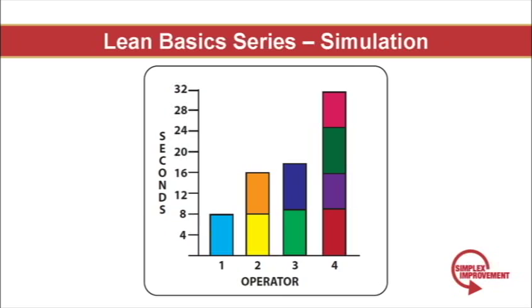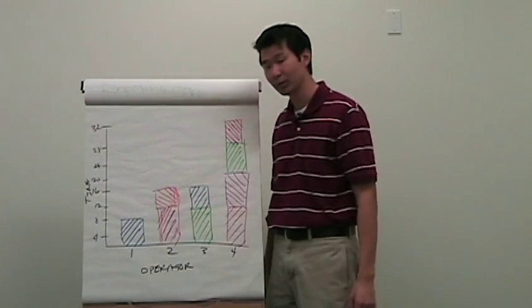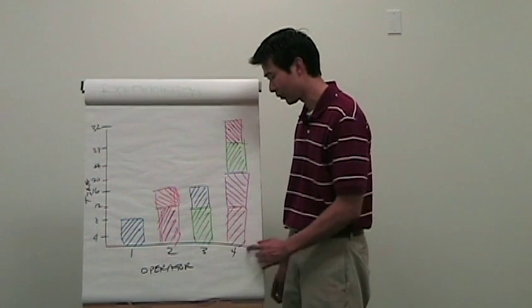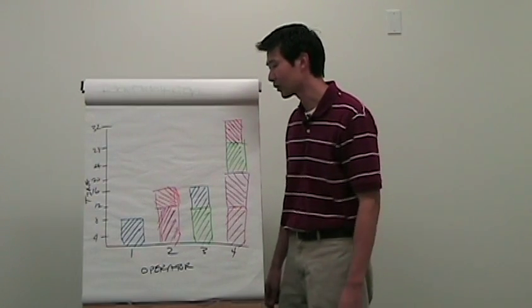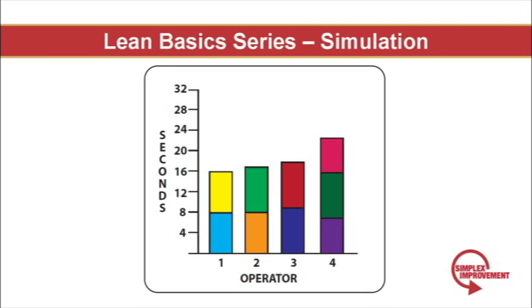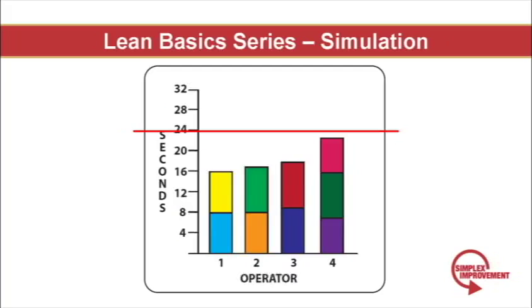This is what level loading means. From the second run, the production line was not very well level loaded: worker one only had to do one fold, whereas worker four had to do four folds, and workers two and three only had to do two folds each. As a result of the imbalance, worker one could outpace everyone and caused the majority of the work in process. As a customer, I need planes every 24 seconds, but the way the system was set up, worker four took about 32 seconds to complete his portion. So this is where level loading comes in — we divided all the folds pretty evenly across all operators so they can easily meet the customer demand of a plane every 24 seconds.